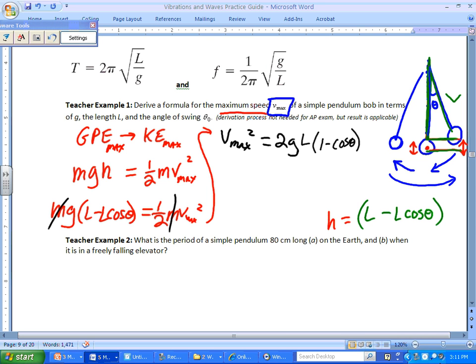One minus cosine of theta. So then your expression for vmax is going to be the square root of all of that. So 2gL, one minus cosine of theta. And that's your answer to this problem. Expression for vmax in terms of L and theta.